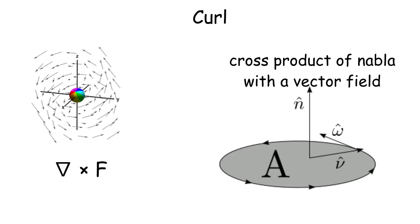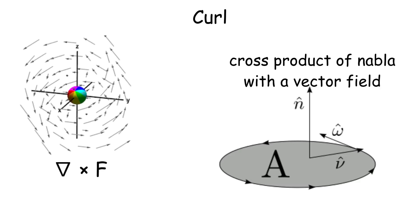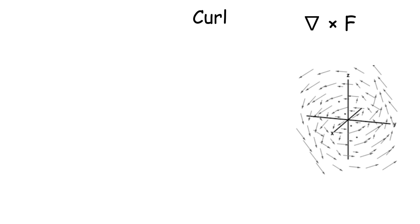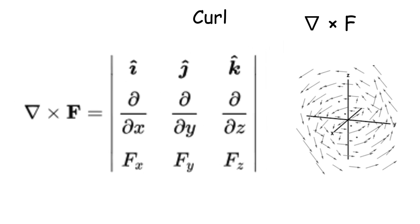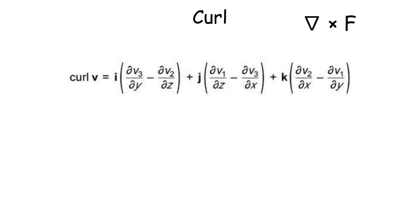Then there's curl, which is the cross product of Nabla with a vector field. It measures the rotation of a vector field at each point. The curl operation involves taking partial derivatives and arranging them in a specific cross product pattern.